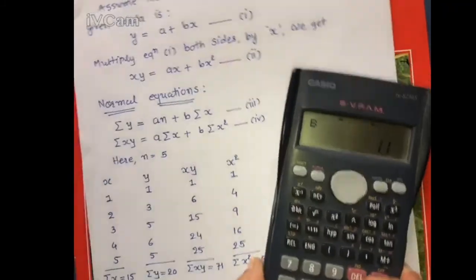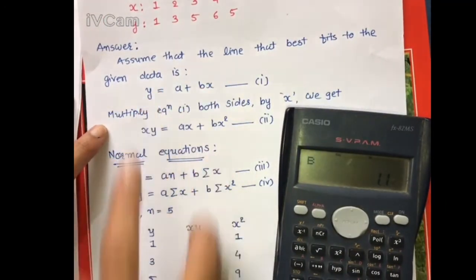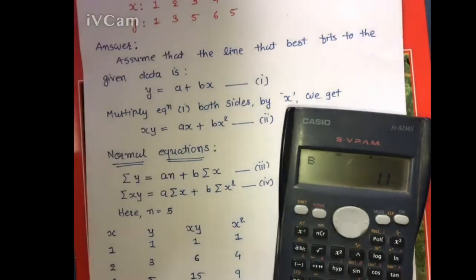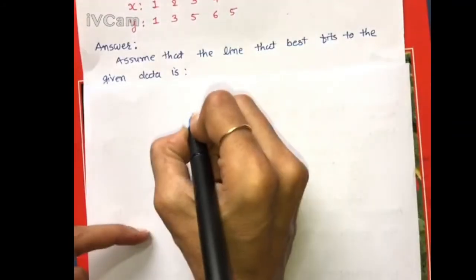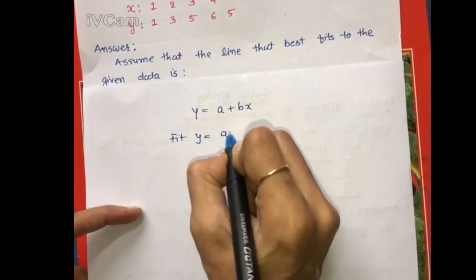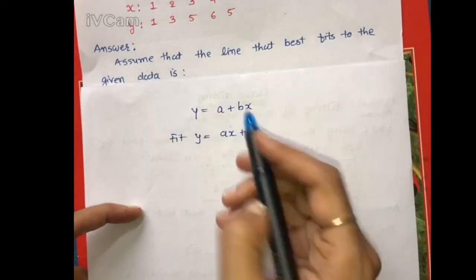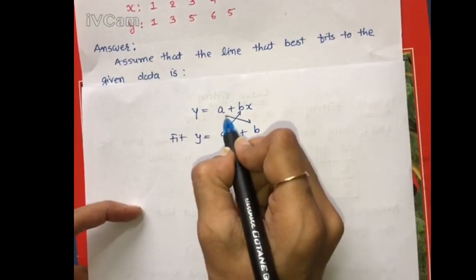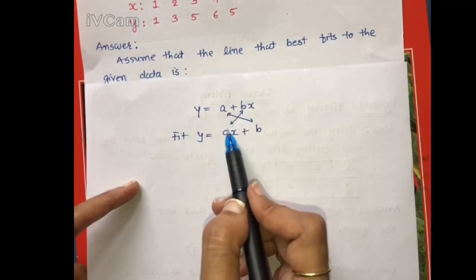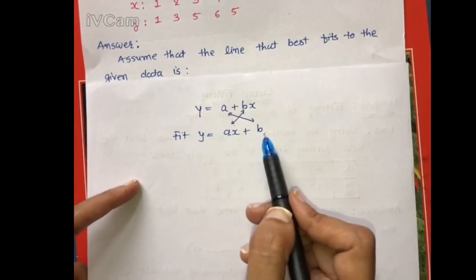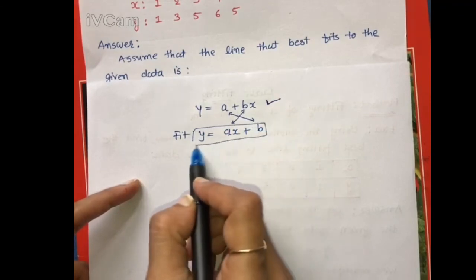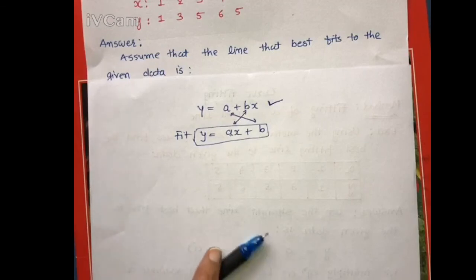Note that this calculator calculates for the equation y = a + bx, which is what we assumed. However, if you are asked to fit the curve y = ax + b, then the calculator's a becomes your b, and the calculator's b becomes your a — they are simply interchanged. So if the problem states y = ax + b, replace a and b accordingly. Thank you, everyone.